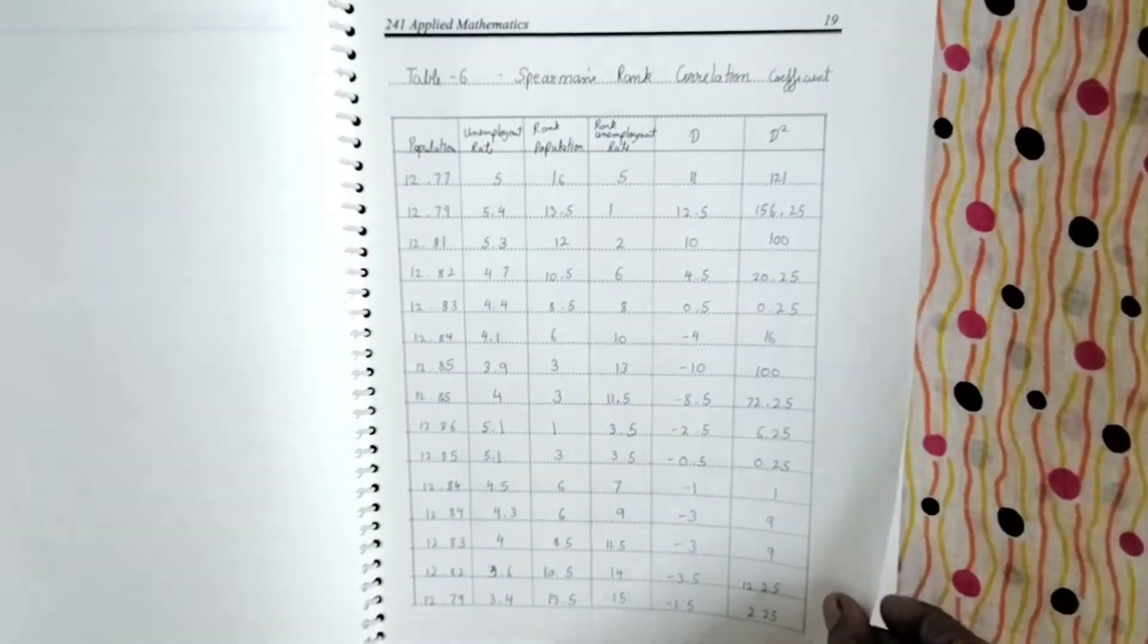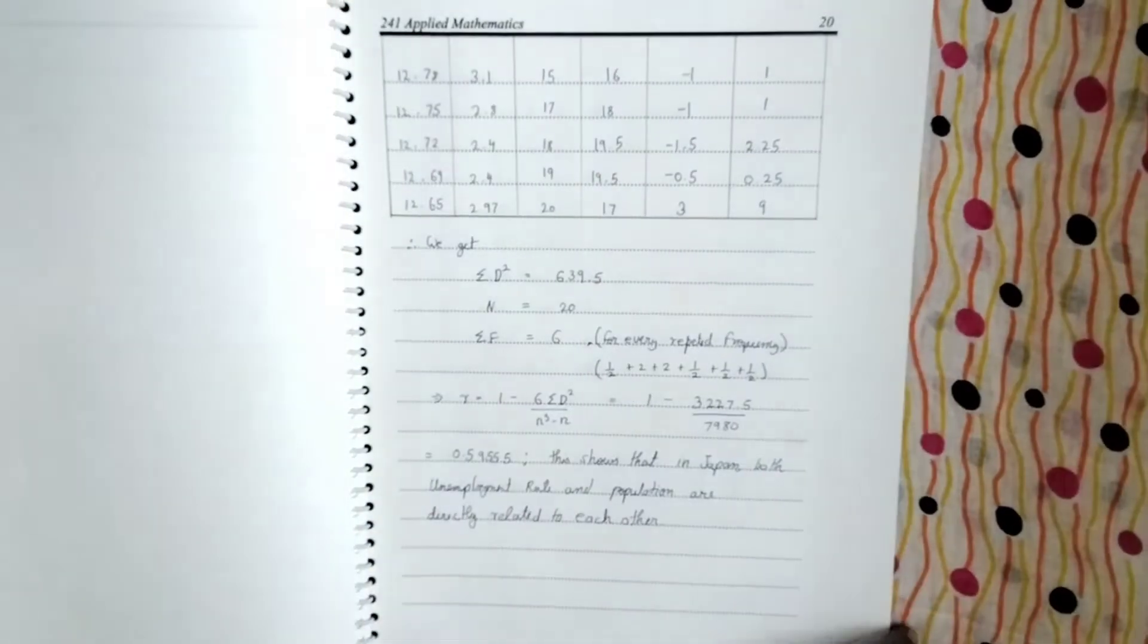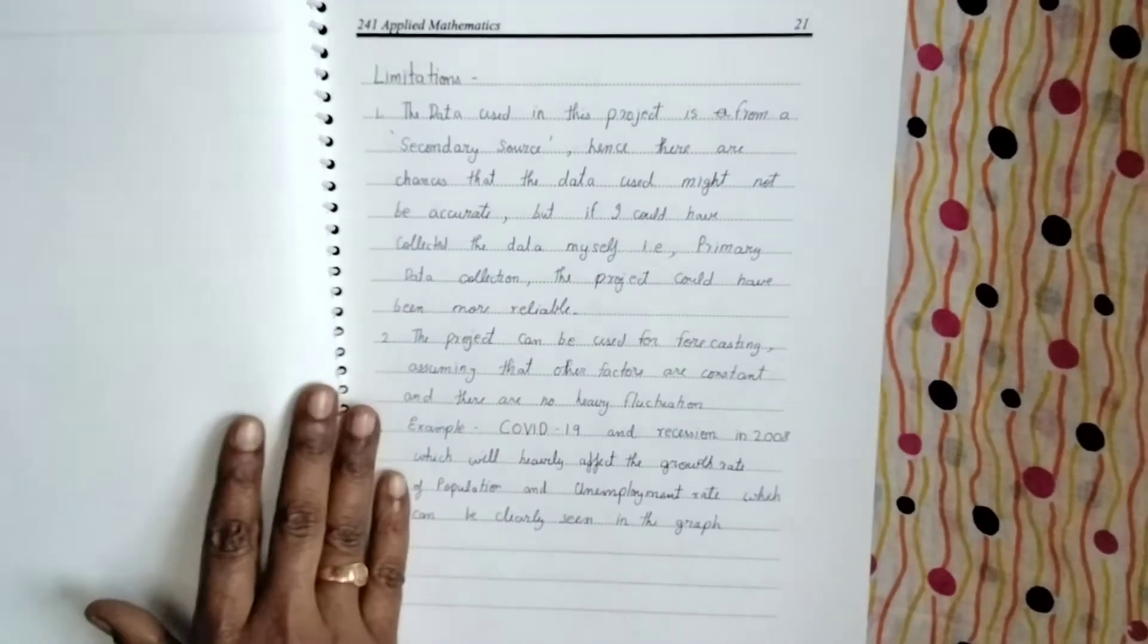See the ranks, Spearman rank correlation coefficient, everything he's found. Here also he's got different, different values of R. Now, after that he's given the limitation.